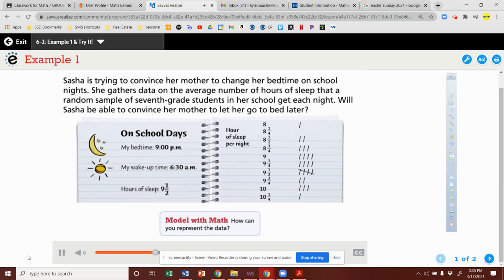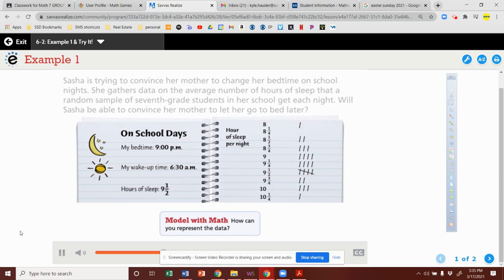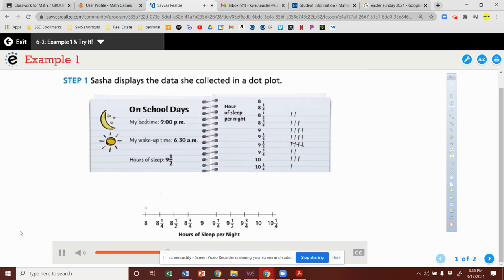To answer this question, you need to think about how you can represent Sasha's data. Sasha decides to display the data she collected in a dot plot.